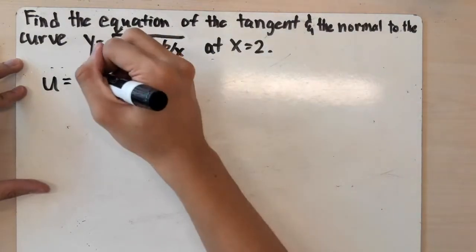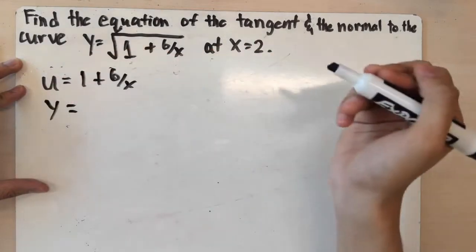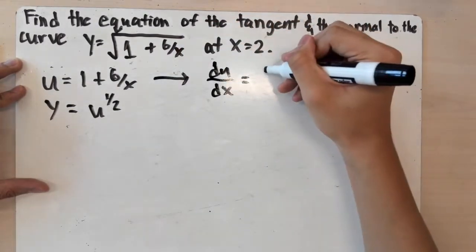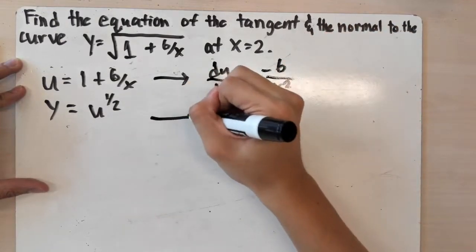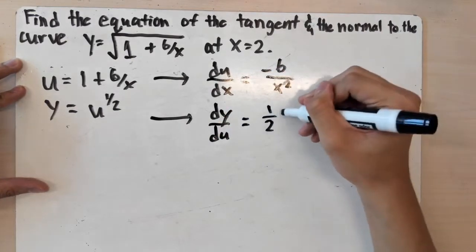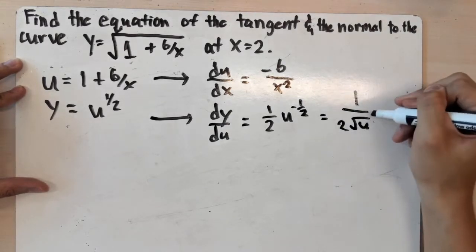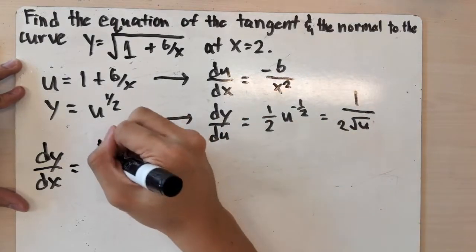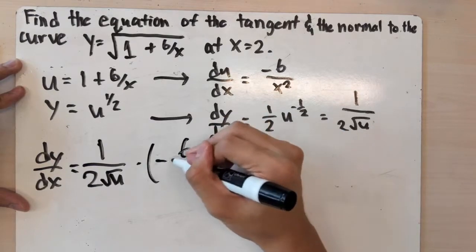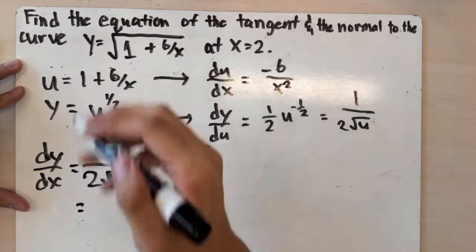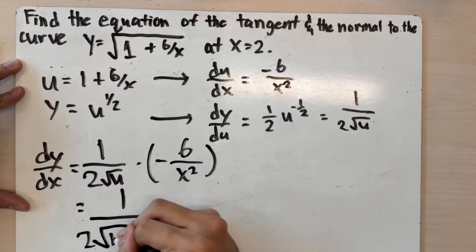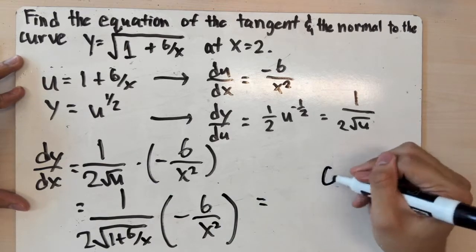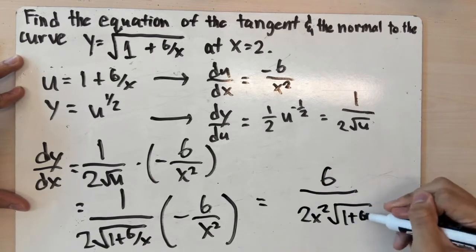We'll apply chain rule. One of the functions is u equals 1 plus 6 over x, and the outer function is u to the one-half. Finding the derivatives: du/dx equals negative 6 over x squared, and dy/du equals one-half times u to the negative one-half, which is 1 over (2 times the square root of u). By chain rule, dy/dx is the product of these two: (1 over 2 root u) times (negative 6 over x squared). Substituting u, we get negative 6 over (2x squared times the square root of 1 plus 6 over x), which simplifies to negative 6 over (2x squared times root(1 plus 6 over x)).